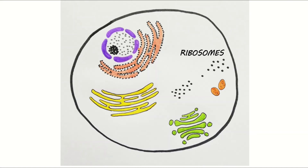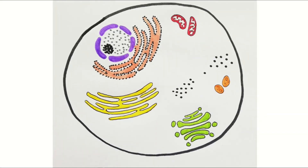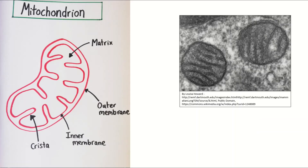Finally we get to the organelle that we've all been waiting for — the mitochondrion. Mitochondria carry out aerobic respiration, which releases energy from glucose in the form of ATP. Mitochondria have a double membrane, just like the nucleus.